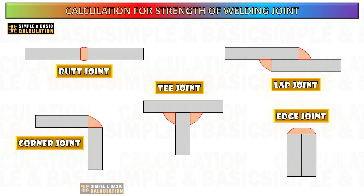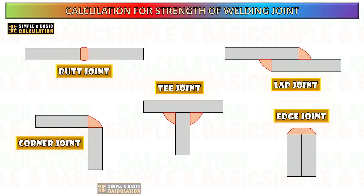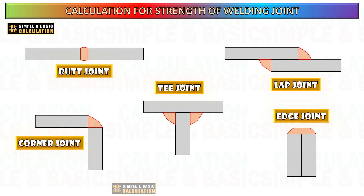Lap joint: overlapping pieces welded together, typical for sheets or plates of different thicknesses. T-joint: one piece perpendicular to another, forming a T, used in structural applications.